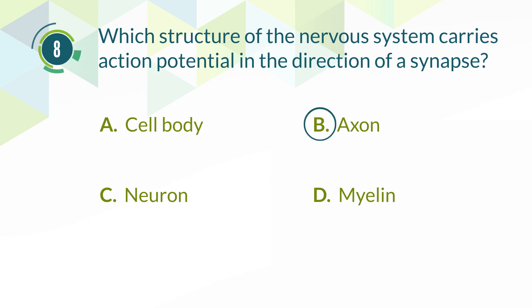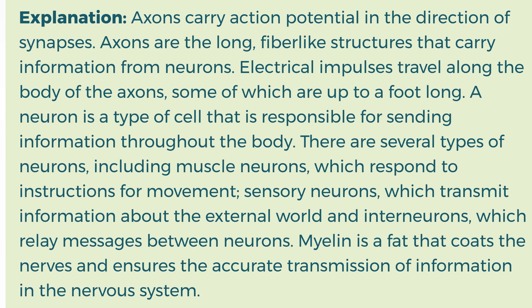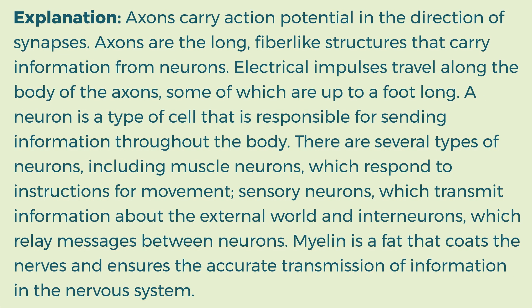The correct answer is B. Axon. Explanation: Axons carry action potential in the direction of synapses. Axons are the long, fiber-like structures that carry information from neurons. Electrical impulses travel along the body of the axons, some of which are up to a foot long. A neuron is a type of cell that is responsible for sending information throughout the body. There are several types of neurons, including muscle neurons, which respond to instructions for movement; sensory neurons, which transmit information about the external world; and interneurons, which relay messages between neurons. Myelin is a fat that coats the nerves and ensures the accurate transmission of information in the nervous system.